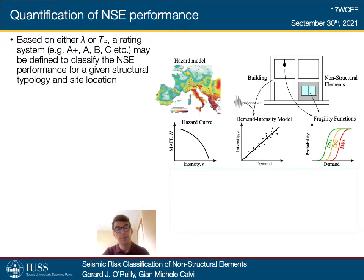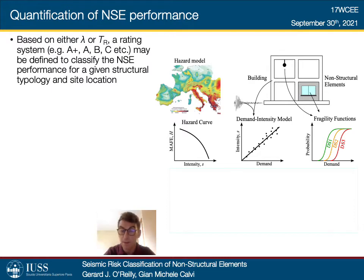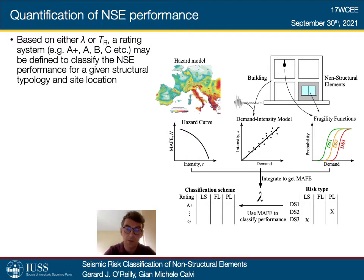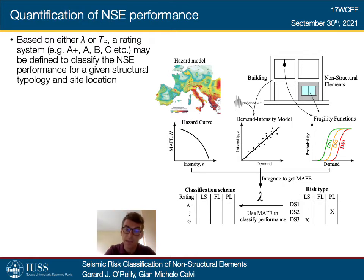For the quantification of non-structural element performance, we're looking at three things: the hazard, the demand intensity model, and the fragility function of the non-structural element components themselves. Combining these, we can compute the mean annual frequency of exceedance — what is the mean annual frequency of exceeding the damage limit state of that non-structural element? Given the different damage states for non-structural elements, some may be associated with different kinds of risks. For example, life safety risk is associated with something like the collapse of a ceiling system or masonry infills, while the loss of a key component in a factory would be a functionality loss.